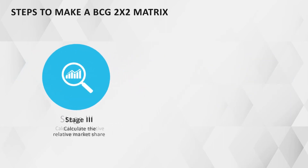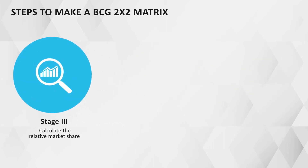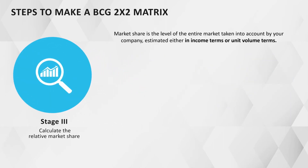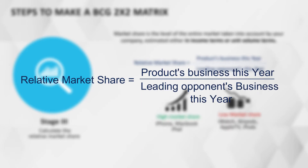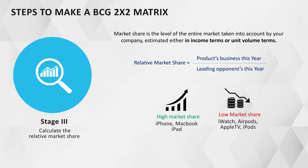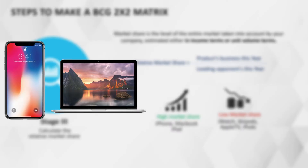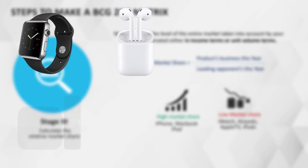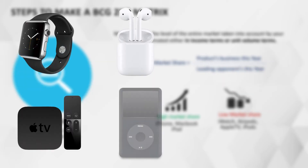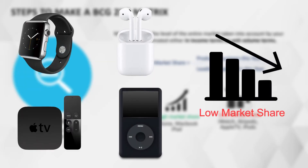Stage 3: Calculate the relative market share. Relative market share of a company is the product's business this year divided by the leading opponent's business in the current year. In our example, products like iPhone, MacBook, and iPad have high market share, while iWatch, AirPods, Apple TV, and iPod have a low market share.